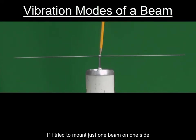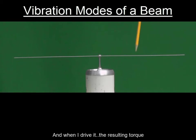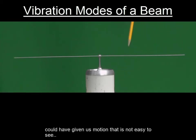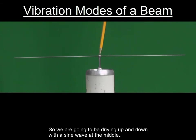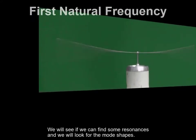If I tried to mount just one beam on one side, the center of gravity would be over here somewhere, and when I drive it, the resulting torque could have given us motion that's not easy to see. So we're going to be driving up and down with a sine wave at the middle. We will see if we can find some resonances and we'll look for the mode shapes.